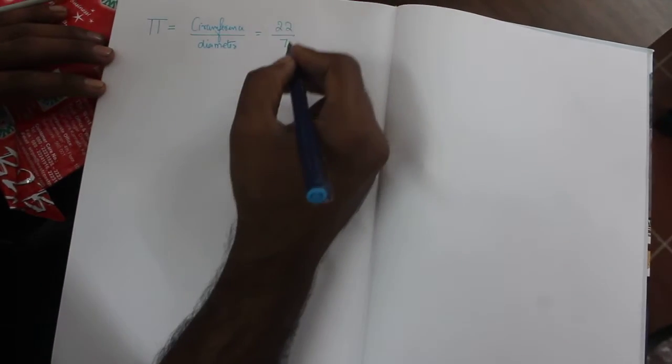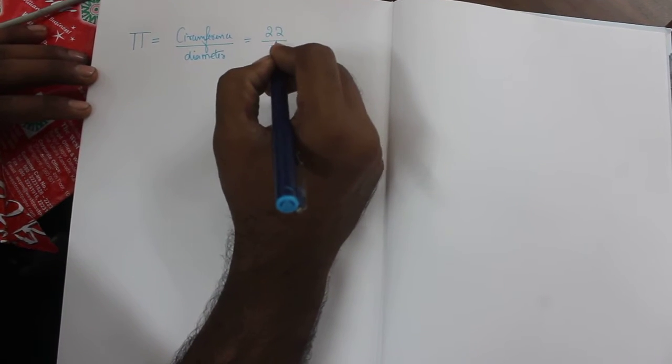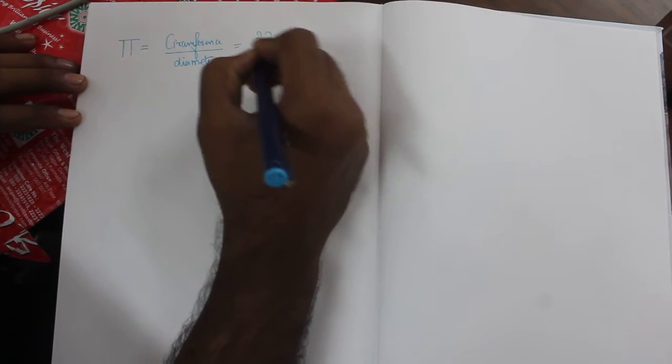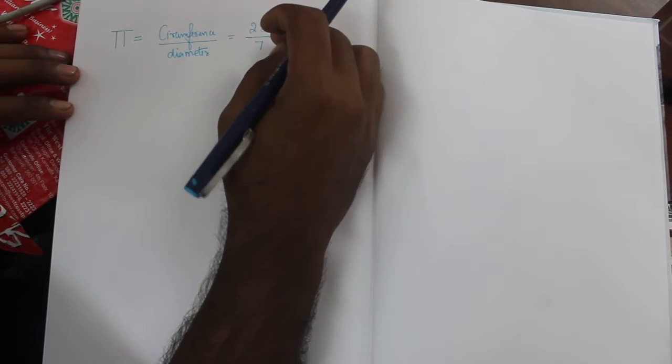Now the meaning is, if you have a circle with diameter of 7 cm, the circumference of the circle will be 22 cm. So this is the meaning of pi.